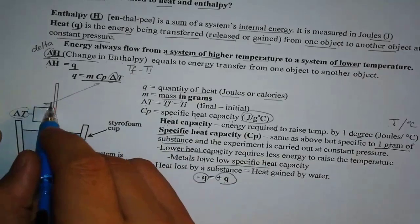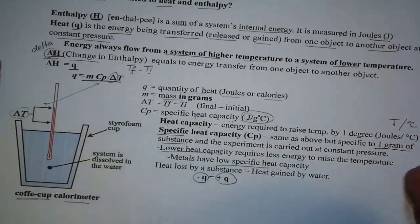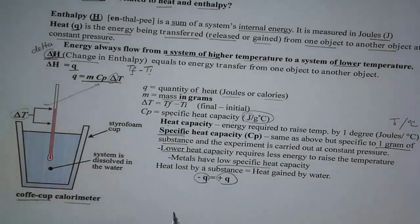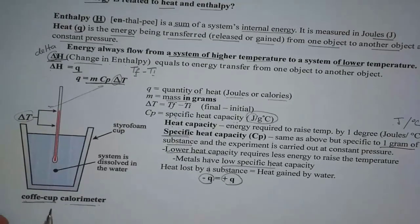So we can measure the change in T, and once we get the change in T, we can actually solve for a specific variable in the equation. So we're going to look at those more specifically. So again, know that we are using a coffee cup calorimeter.